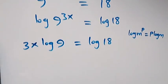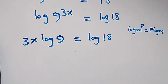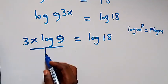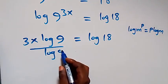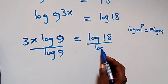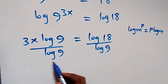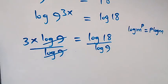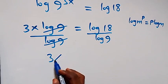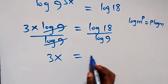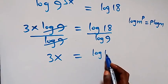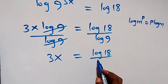And we have 3x log 9 equals to log 18. Then next step, let's divide both sides by log 9. We divide here by log 9, and also divide this side by log 9. Log 9 cancels, and we are left with 3x equals to log 18 over log 9.